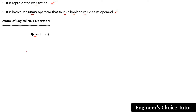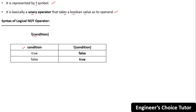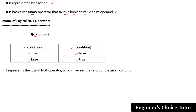Looking at the truth table: the condition and its inverse. If the condition is true, you get false as output. If the condition is false, you get true as output. So the logical NOT operator inverses the result of the given condition — the condition was true and in the output you get the inverse, which is false.